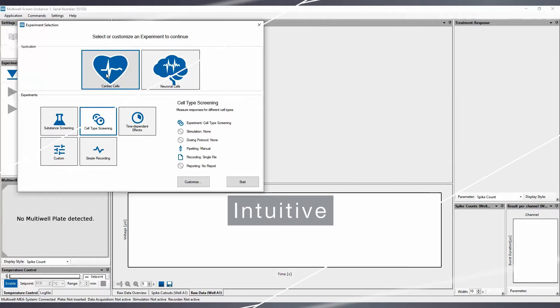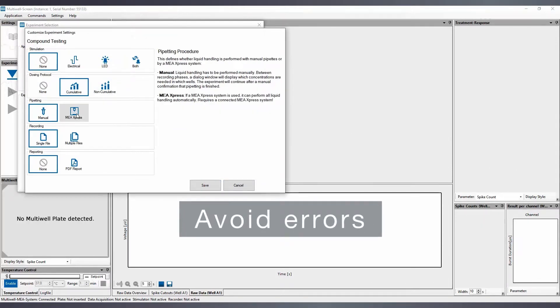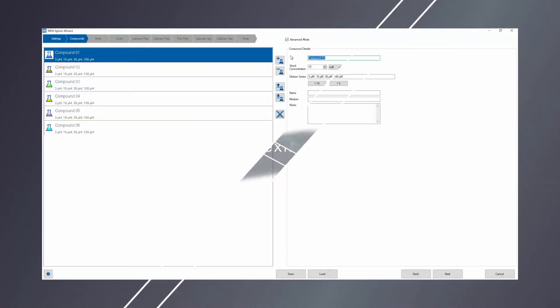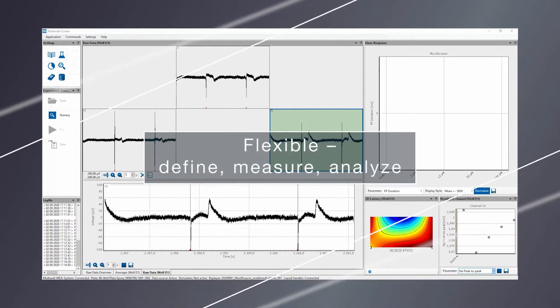It's also intuitive. With the click-and-go protocol, you can avoid pipetting and documentation errors. And flexible software means you can define, measure, and analyze.